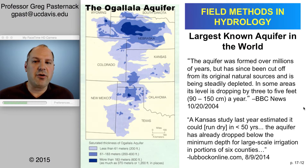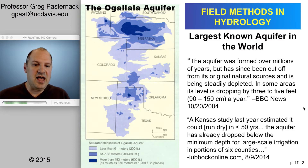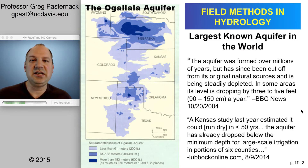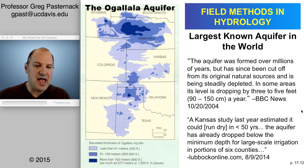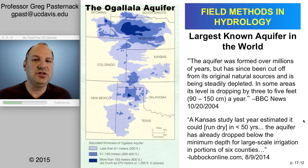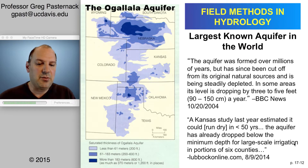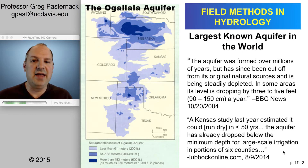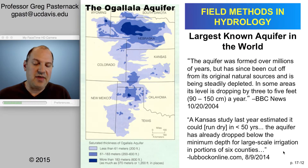Just for reference, the largest known aquifer in the world is the Ogallala Aquifer in the Midwestern United States. It has been cut off from its natural sources and it's being pumped really, really fast. This is an example where hydrology plays a very important role in being able to characterize our use of water and problems that arise from that. Studies have shown that it only has about 50 years until it runs dry completely, and in some regions it's already below the minimum depth in order to facilitate large-scale irrigation.